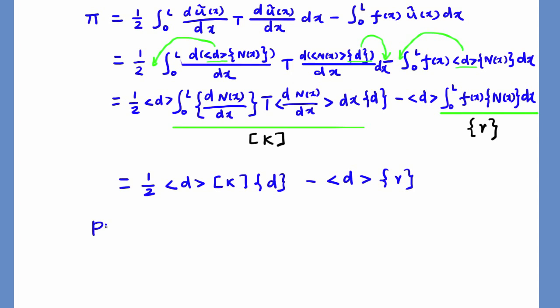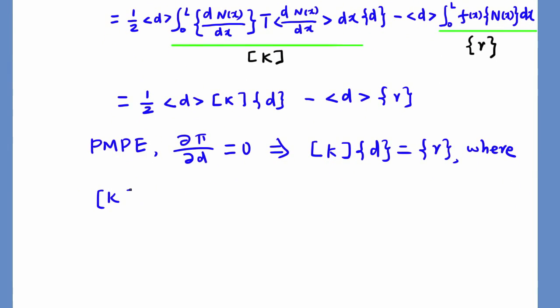Of course, if we use PMPE, take derivative of potential energy with respect to ds. Thus, we get this implicit finite element formulation Kd equal to R, where this K is the stiffness matrix for the elements we constructed, which will be a square matrix.